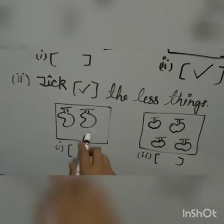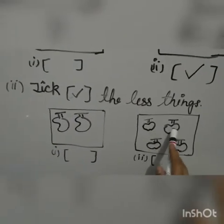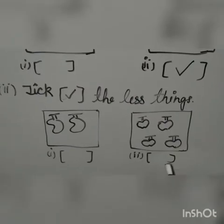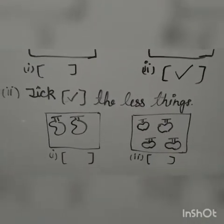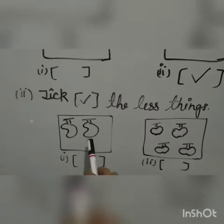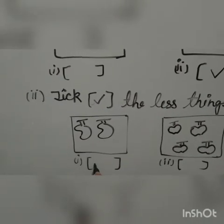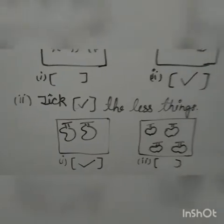And 1, 2, 3, 4. There are 4 apples in this box. This box has 2 mangoes and this box has 4 apples. So this box has less things. You have to tick here.